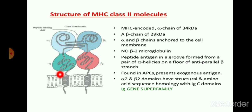In this figure you can see that alpha 2 and beta 2 are anchored in the transmembrane of the cell. No beta-2 microglobulin is present in MHC class 2 molecules — unlike MHC class 1 where beta-2 microglobulin is present, in MHC class 2 beta-2 microglobulin is absent. The peptide antigen groove is formed from a pair of alpha helices on the floor of the anti-parallel beta strand.